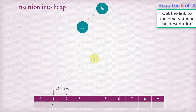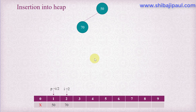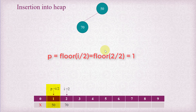Immediately after inserting 70, we find that it is violating the max heap rule because 70 is larger than 50, so 70 must be at the root. The heap is no longer valid, so we need to perform the restore-heap-up operation — comparing with the parent of the current index. i is the current index where we inserted the new element (70), and p is the parent index, which is i divided by 2. So i is 2, and i divided by 2 is 1.